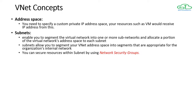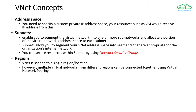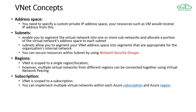You can use network security groups at the subnet level to secure your resources. The next concept is regions - your VNet is scoped to a single region or location. However, you can have VNets across different regions and connect them together with network peering. Your VNet is also scoped to your subscription - you cannot have a single VNet across multiple subscriptions. You can have a maximum of 1,000 VNets in a subscription; if you need more, you can contact Azure.